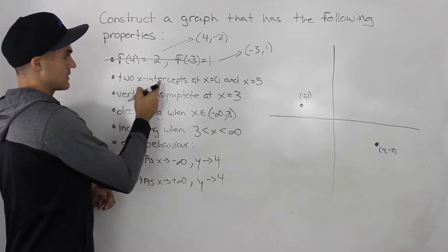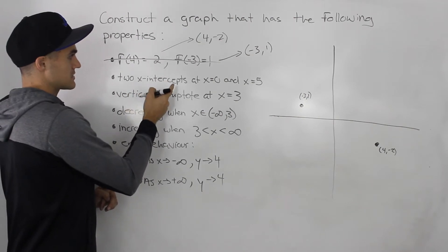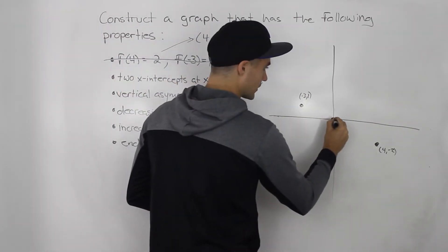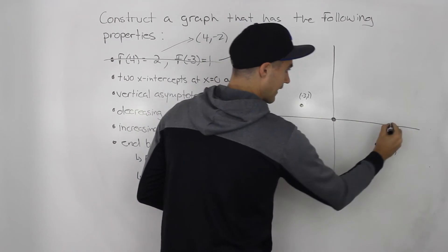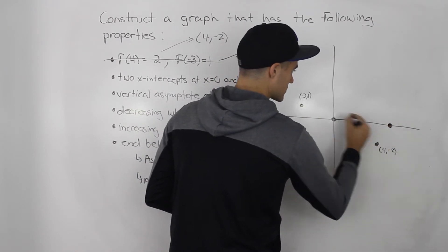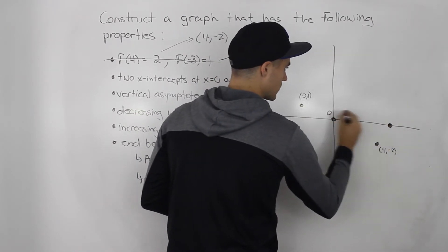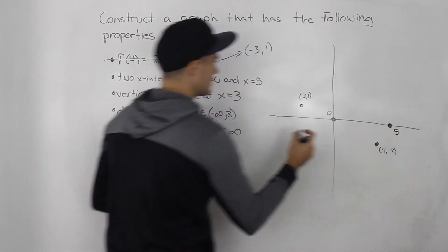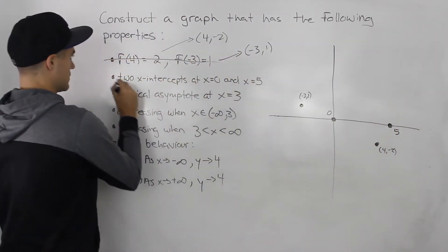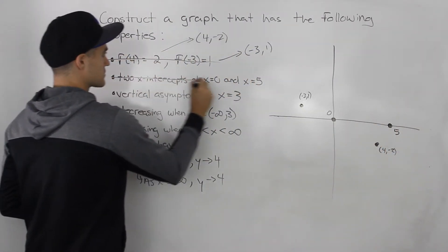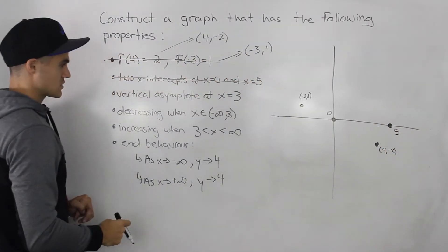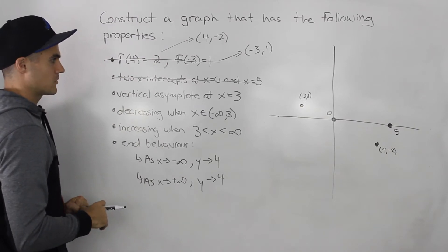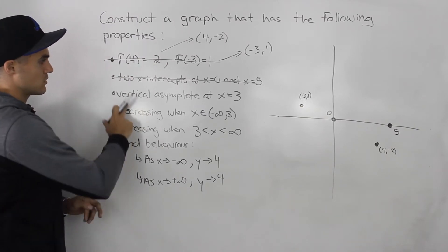Next, there are two x-intercepts at x=0 and x=5. So we're going to have a point here at 0, and a point here at 5. Done with those. Notice how there are no other points to label, so let's move on.